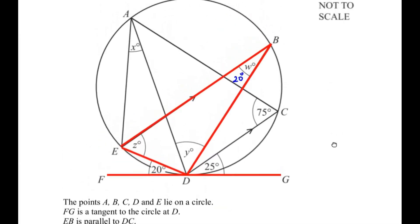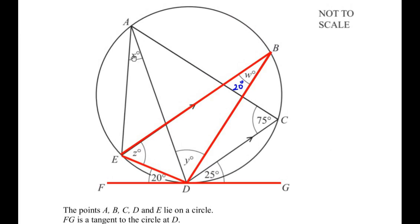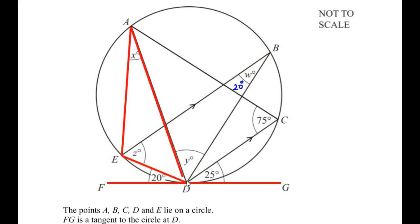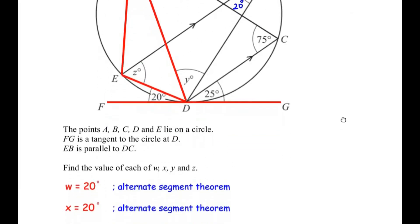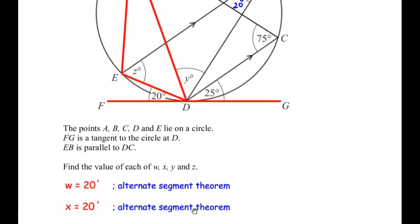Using the same theorem, we can also find angle X. ED is the same chord which is making an angle at point A in the major segment. So the tangent FDG and chord ED are highlighted. Using the same chord, an angle is made at point A in the alternate segment. Hence we get angle X as 20 degrees as well, which is the same as the angle between the chord and the tangent. So angle X equals 20 degrees, by the alternate segment theorem.